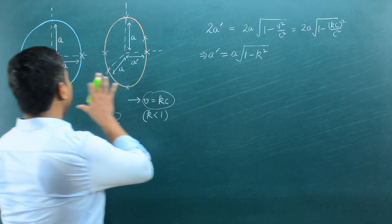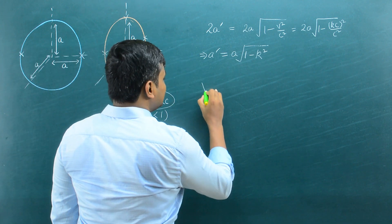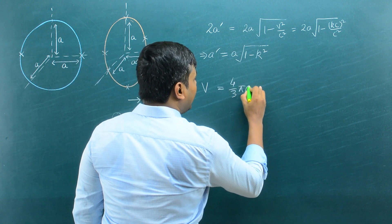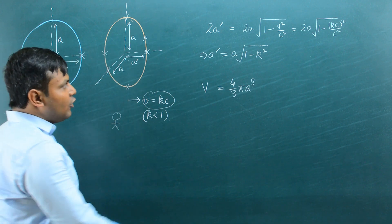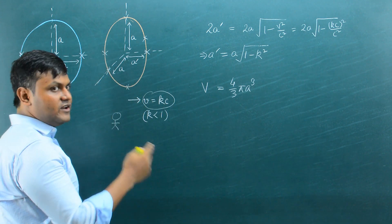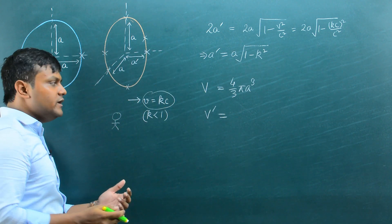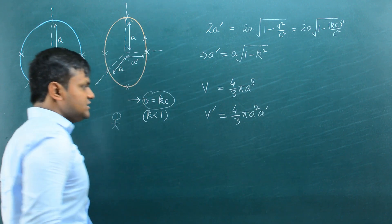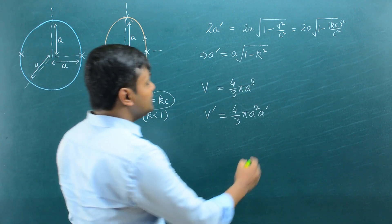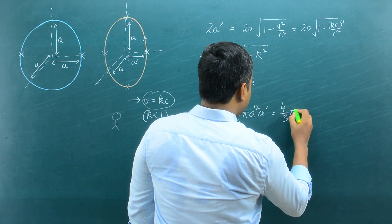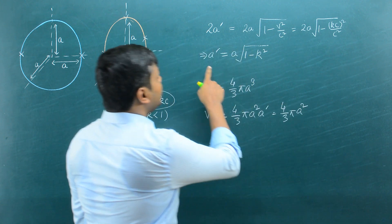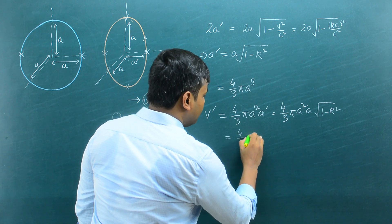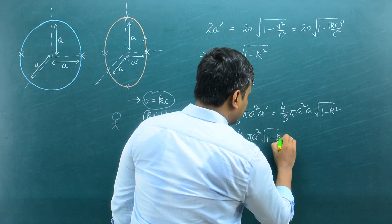The volume of the sphere in its rest frame is V = (4/3)πa³. When measured by an observer in relative motion, the sphere appears as a spheroid, and the volume of a spheroid is V′ = (4/3)πa²·a′. Substituting a′ = a√(1 − k²), we get V′ = (4/3)πa³√(1 − k²).